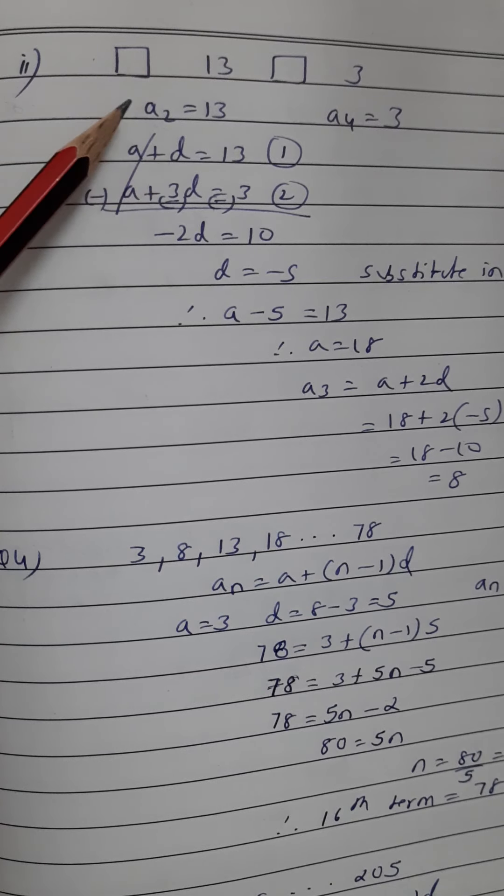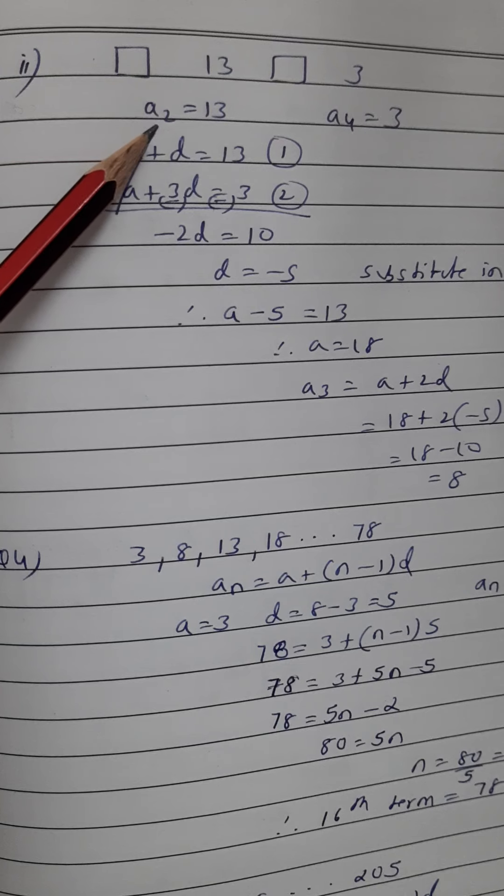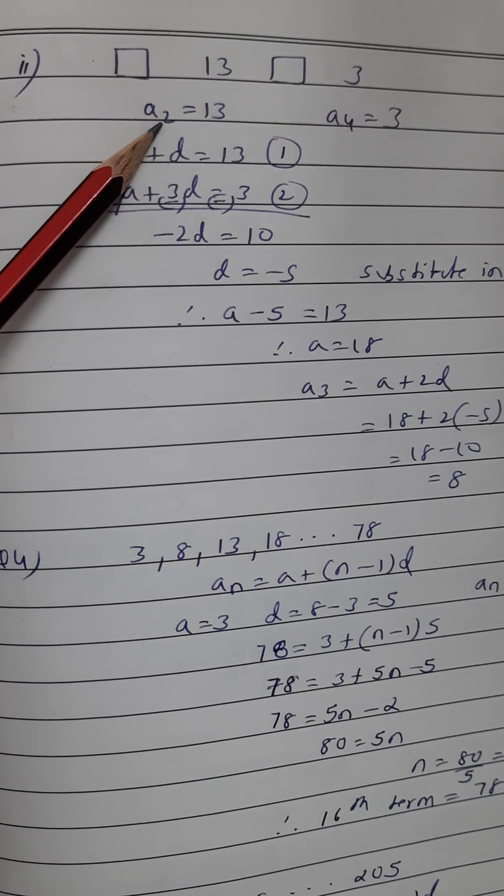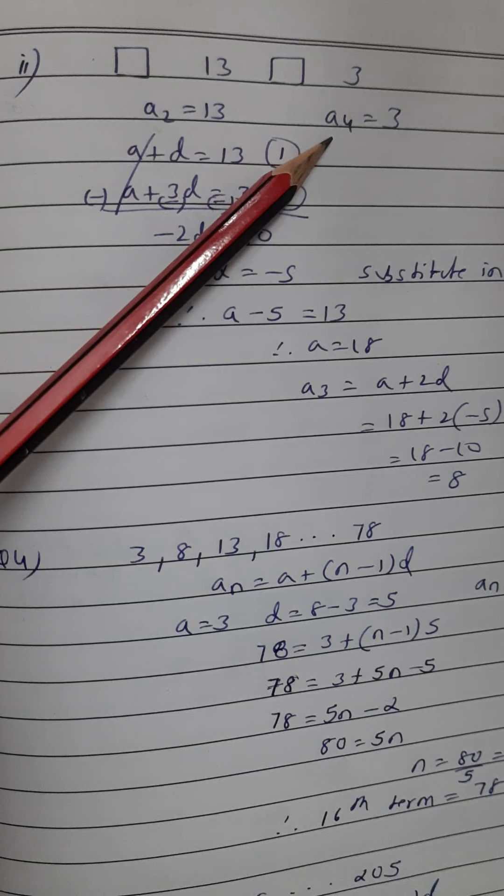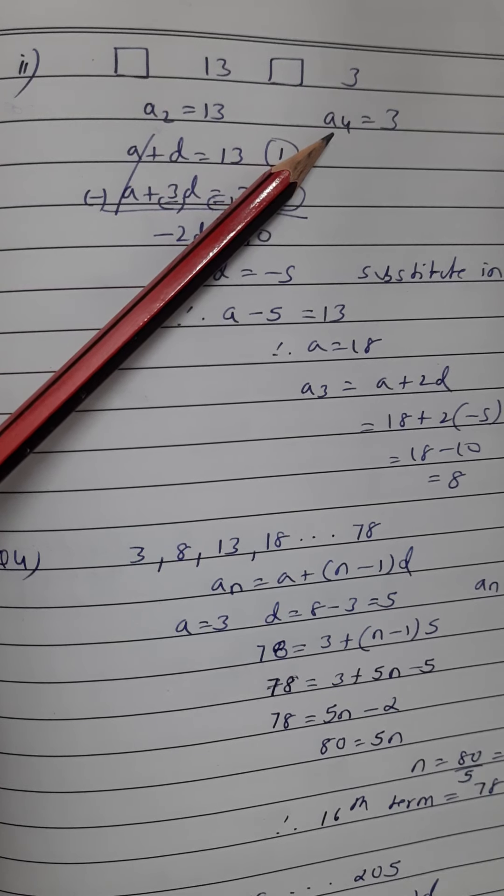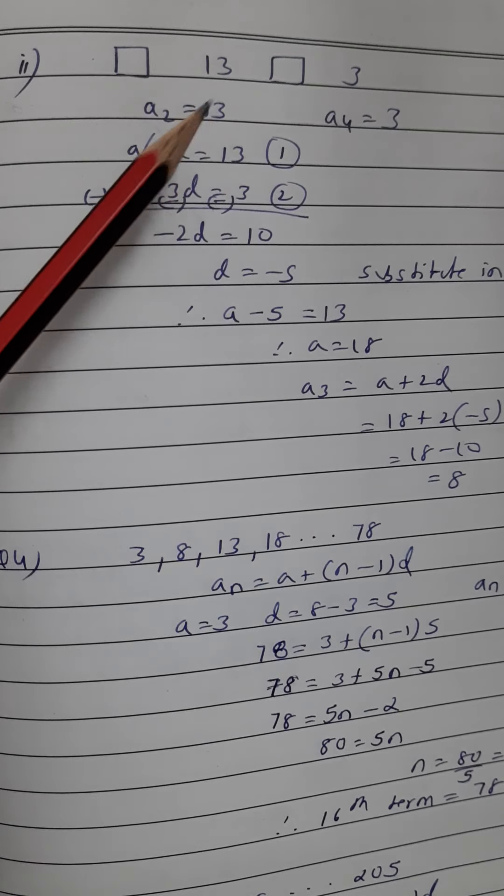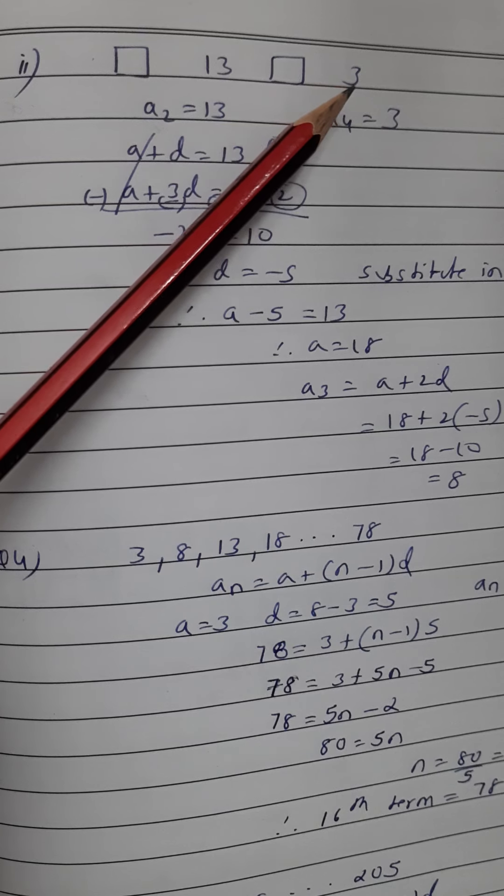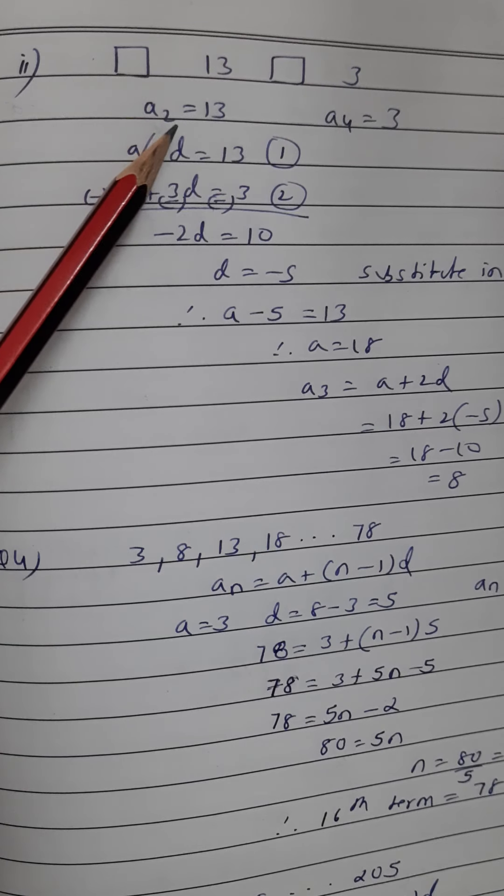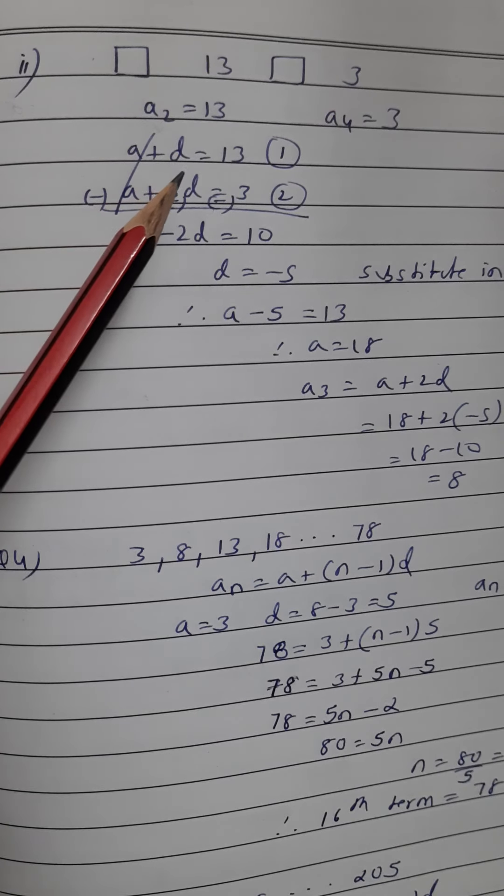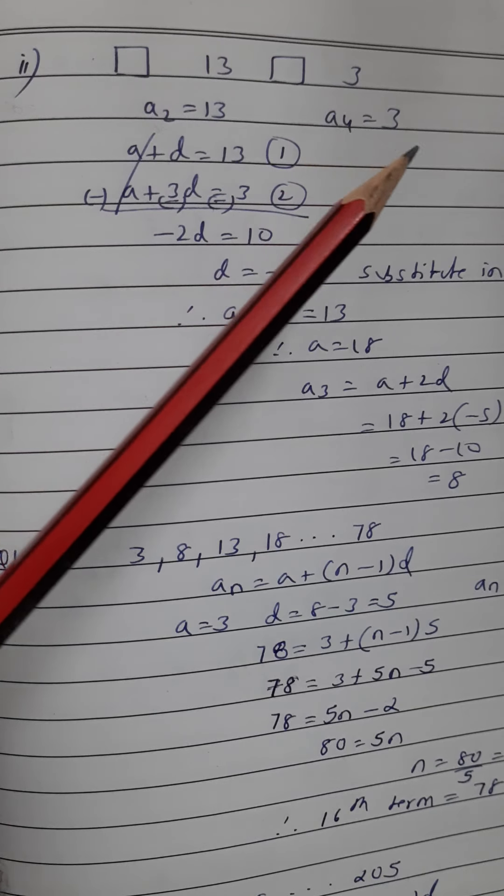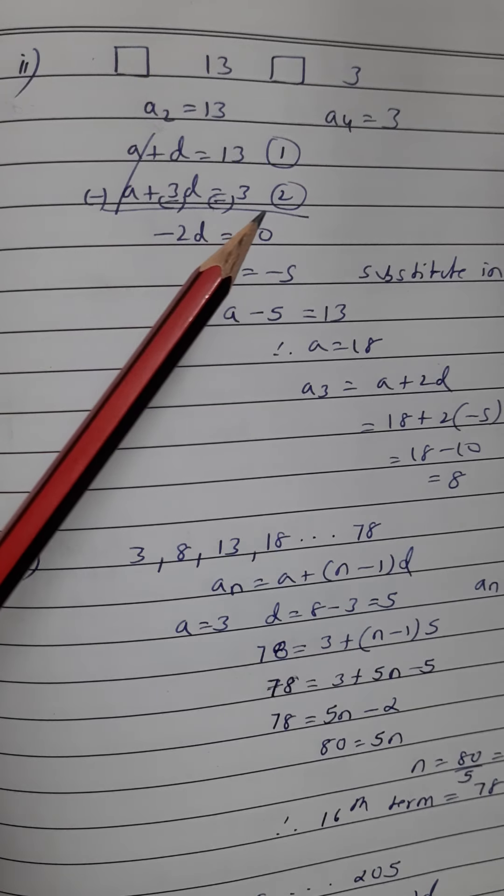Are you understanding this? Second means you have to subtract one from here. Similarly, the fourth term will be how much? a plus 3d. What is a plus 3d? a plus 3d is the fourth term that is given as 3. So second term was 13, so that is a plus 1d or simply a plus d is 13, and the fourth term is 3, so a plus 3d is 3.